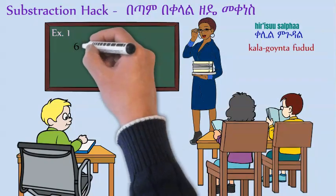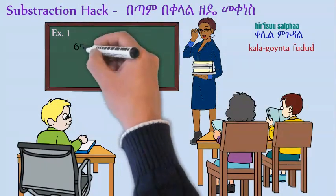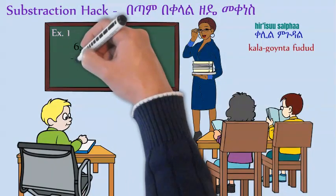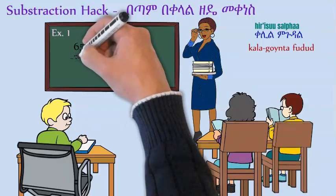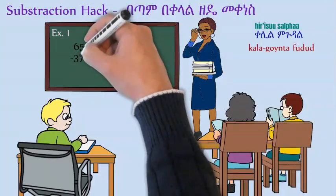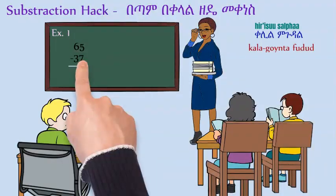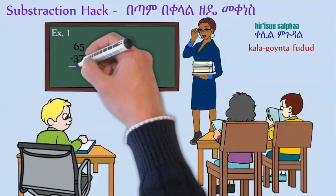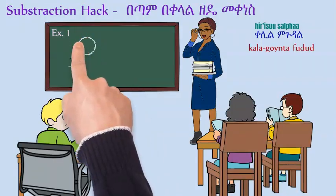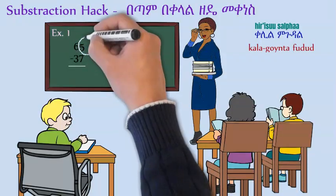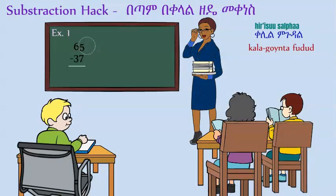Let's say we have 65, and we want to subtract 37. We have to borrow first, but instead of borrowing, let's do something different.